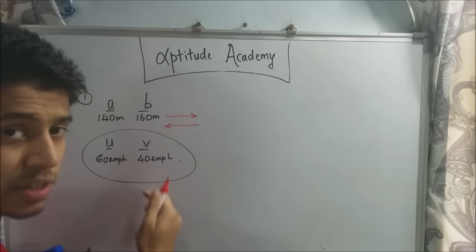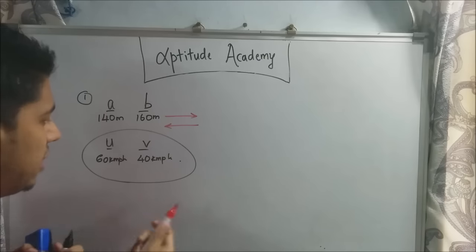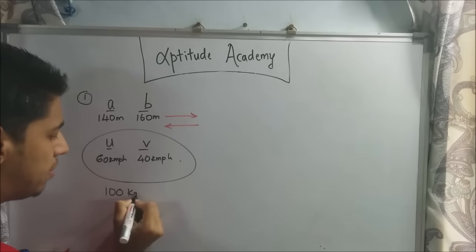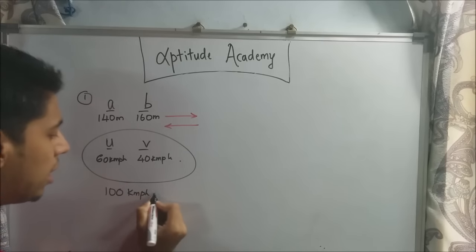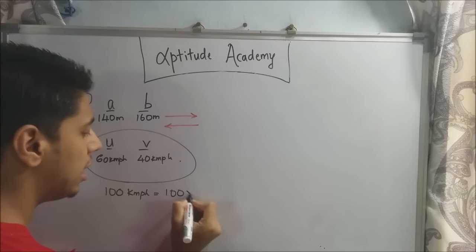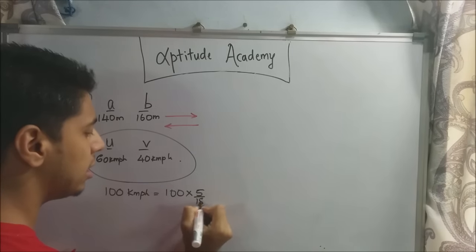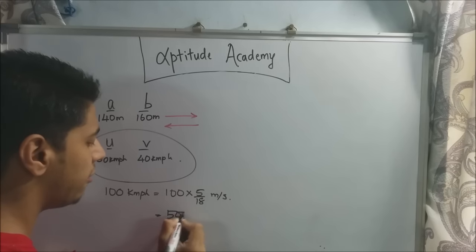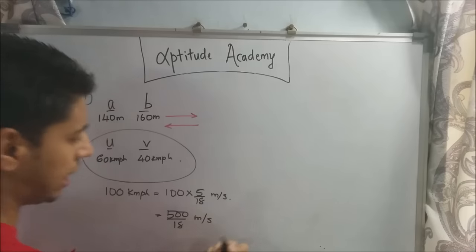So now what we need to do is first convert this to meters per second and then apply the formula. Now you can convert each of them individually or you can add them up and then convert. It's the same thing. So we'll add them up. 60 plus 40 is 100. So 100 kmph is equal to 100 into 5 by 18 meters per second. So that's 500 by 18 meters per second.